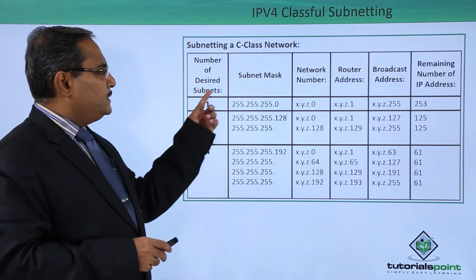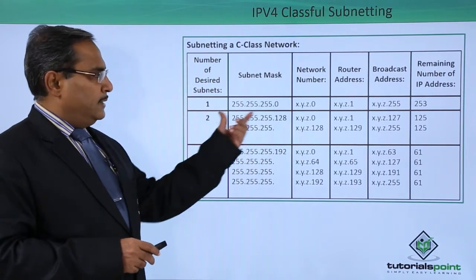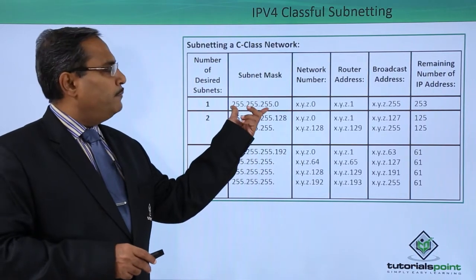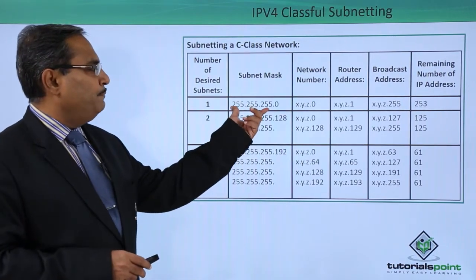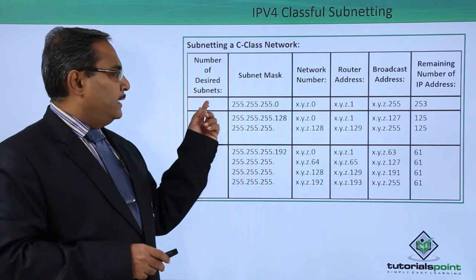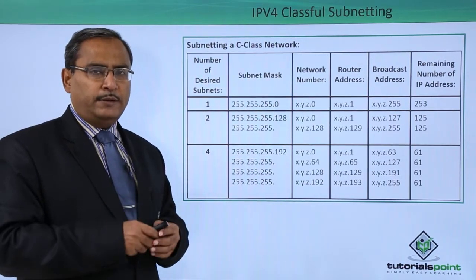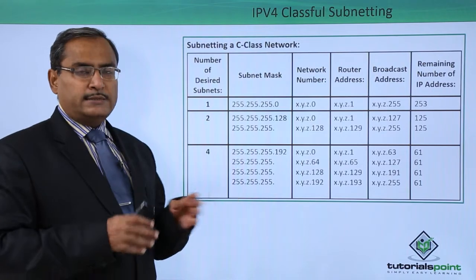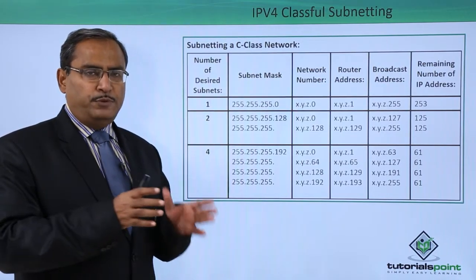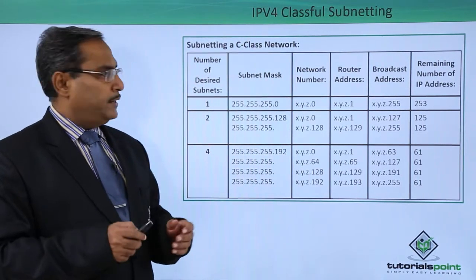Now, if the number of desired subnets is 1, in the case of a class C network — as discussed in the earlier video — the subnet mask will be 255.255.255.0, and that is only one subnet. A subnet means a same broadcast area, meaning to communicate between two nodes, there is no need for any router within the subnet.